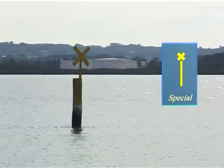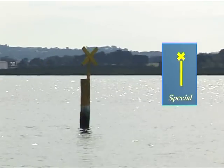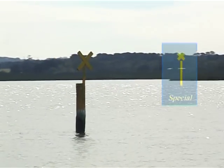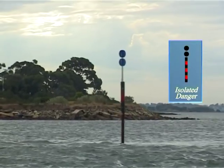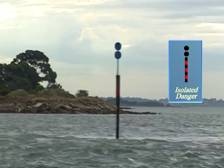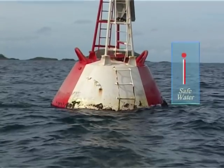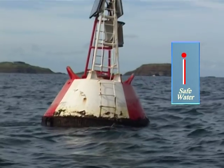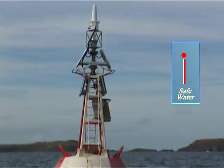The third are special marks, which indicate a special area which will be mentioned on the chart. The fourth are isolated danger marks, which indicate a dangerous submerged object. And the fifth are safe water marks, which indicate that the water all around is navigable.